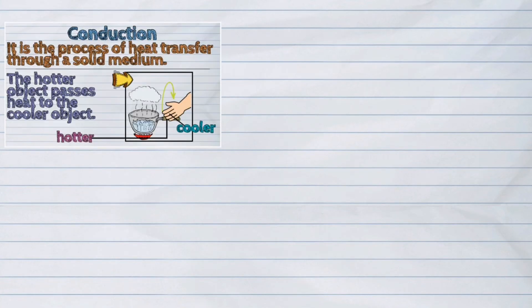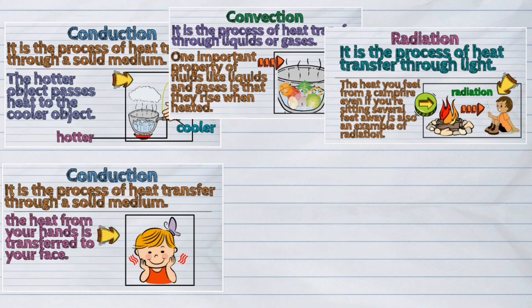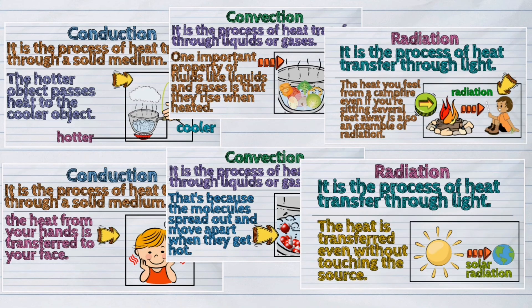Again, heat can travel from one place to another in three ways: conduction, convection, and radiation.